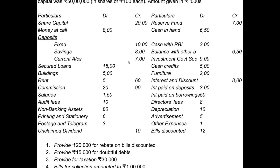Mark the schedule numbers with a pencil. Balances with other banks is Schedule 7 — money at call and balances with other banks. Investments is Schedule 8. Secured loans fall under advances, which is Schedule 9. Cash credits also fall under advances. Buildings and furniture are fixed assets — fixed assets is Schedule 10.